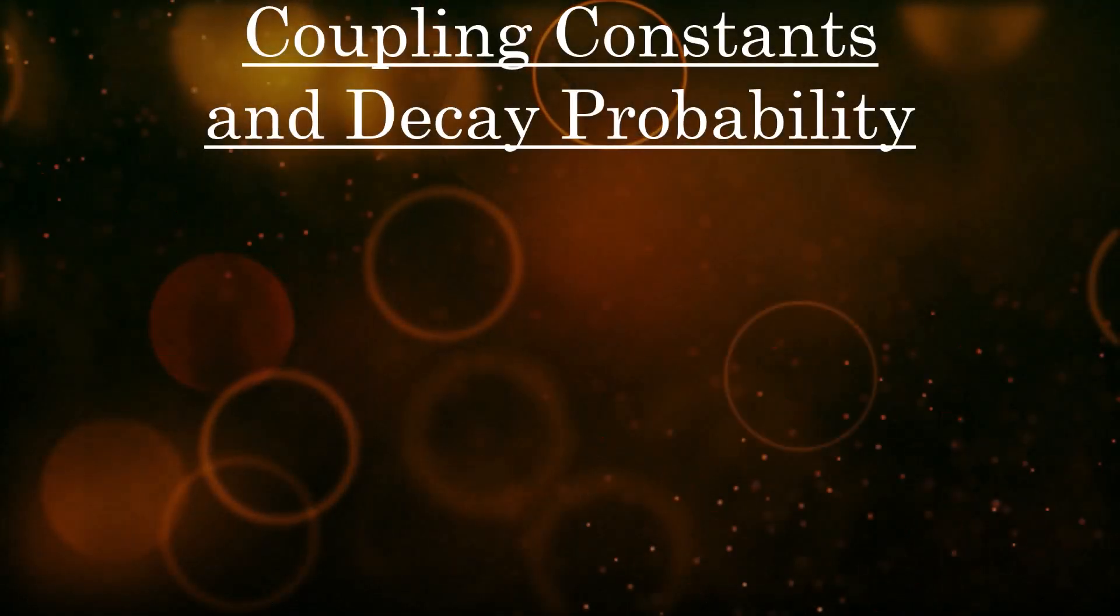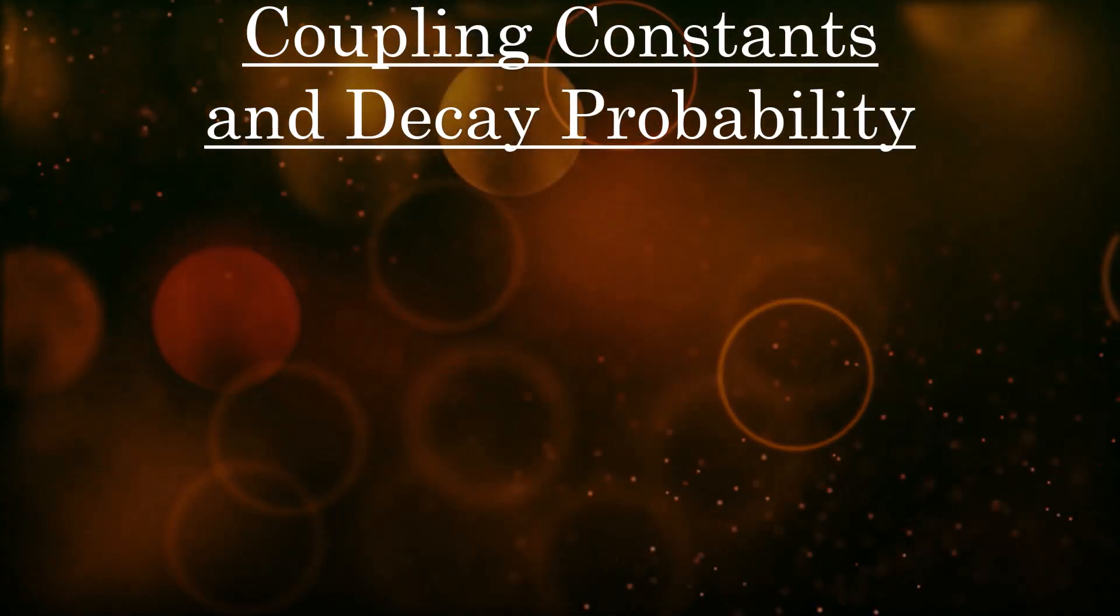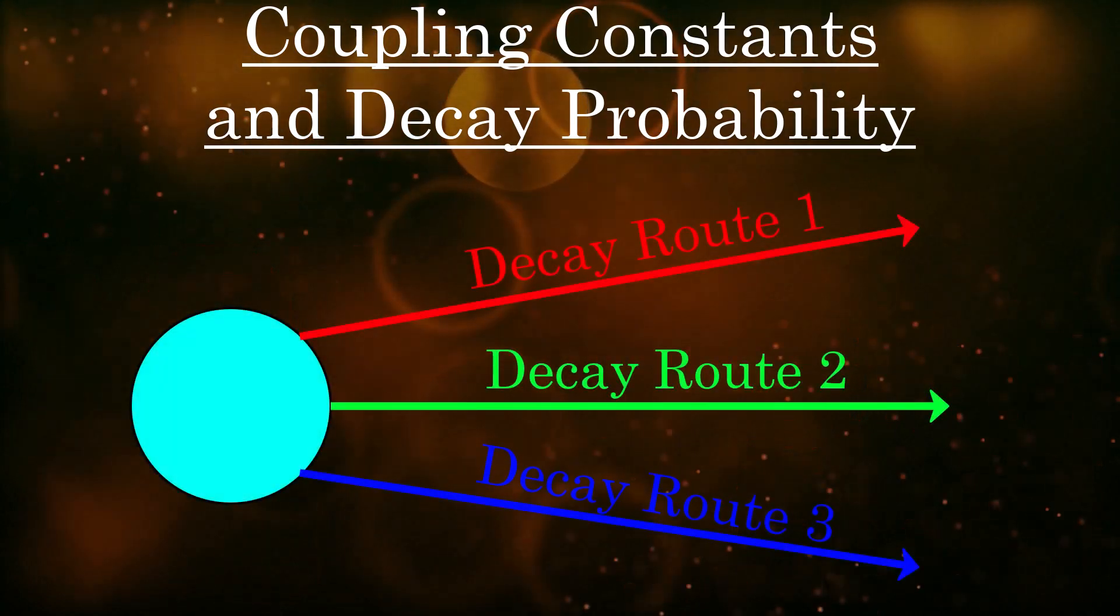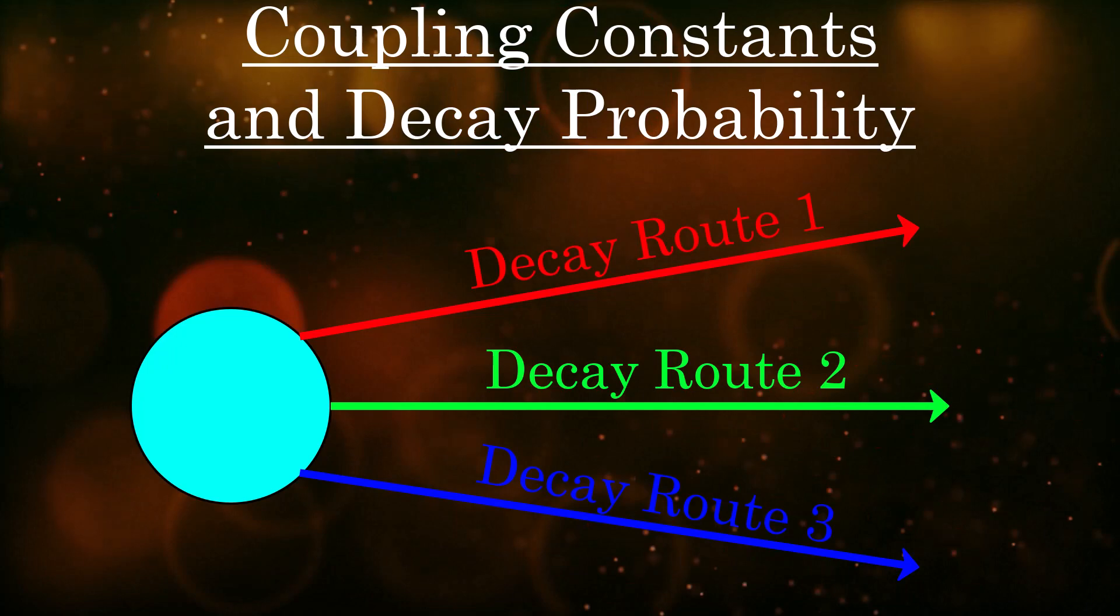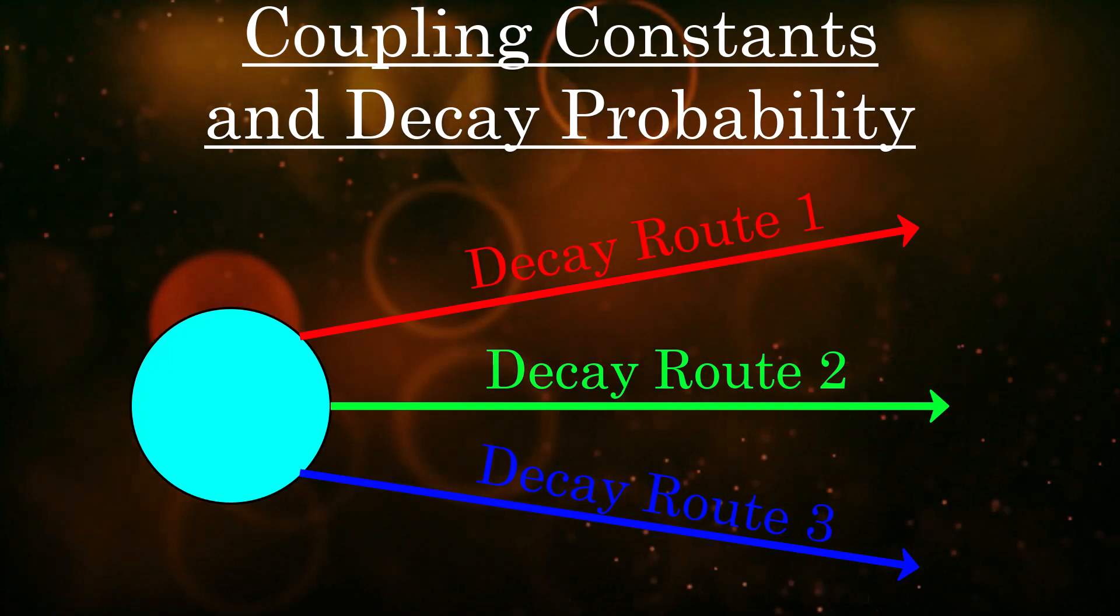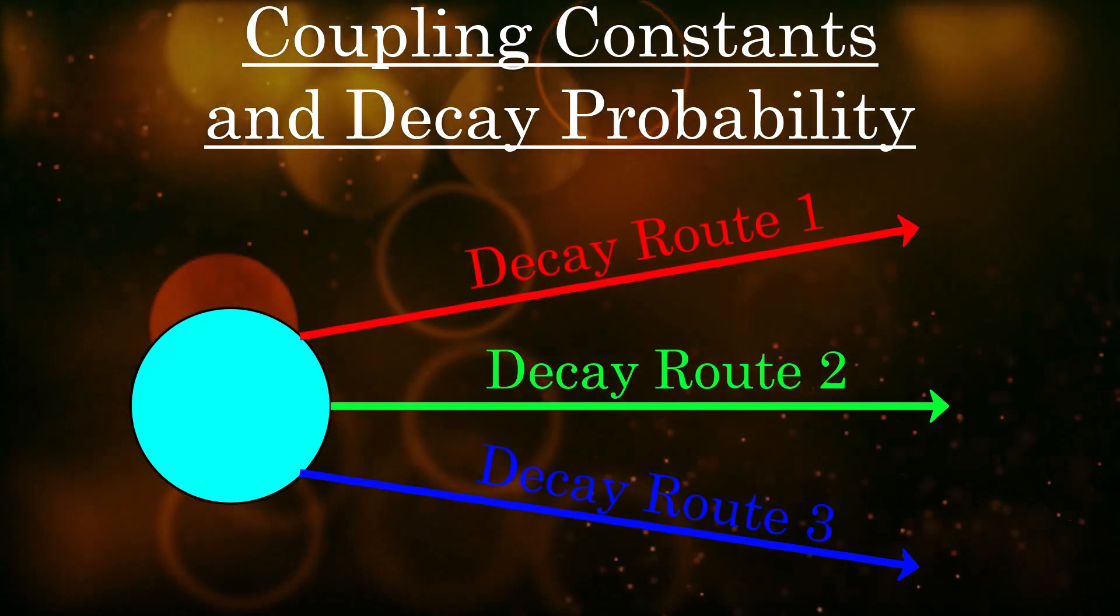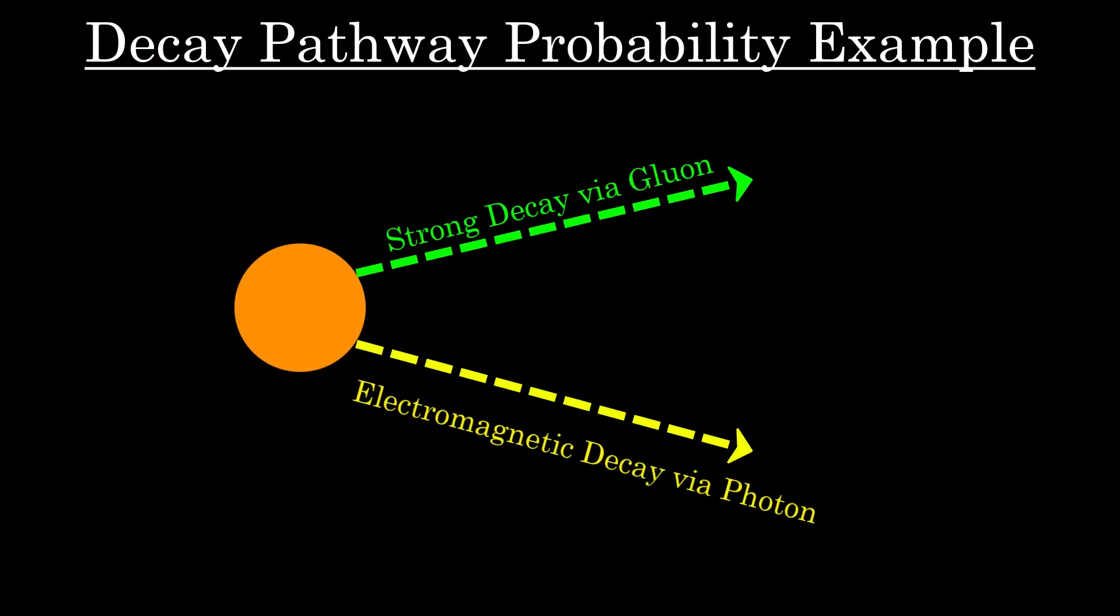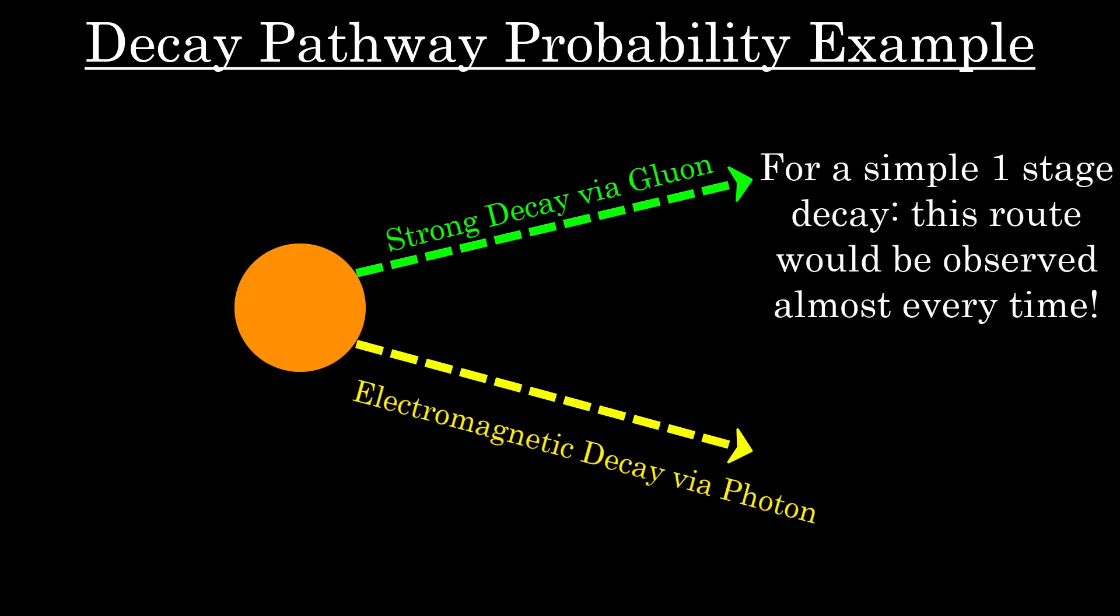But let's not get ahead of ourselves, because before I mentioned how the coupling constants also dictated decay probabilities. What I mean is that if a particle decay has multiple possible pathways, different as they are mediated by different forces, the probability of a specific force doing the decay is proportional to the coupling constants of the force. So say, for example, a particle could decay through the strong nuclear force, and also by electromagnetism. In nature, you would observe the strong decay route to happen over 100 times more often than the electromagnetic route, since the strong coupling constant is around 100 times larger than the fine structure constant.